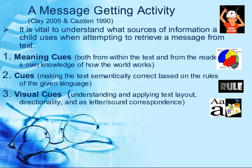A message-getting activity. It is vital to understand what sources of information a child uses when attempting to retrieve a message from text. One: meaning cues, both from within the text and from the reader's own knowledge of how the world works. Two: making the text thematically correct based on the rules of the given language. Three: visual cues, understanding and applying text layout, directionality, and letter-sound correspondence.